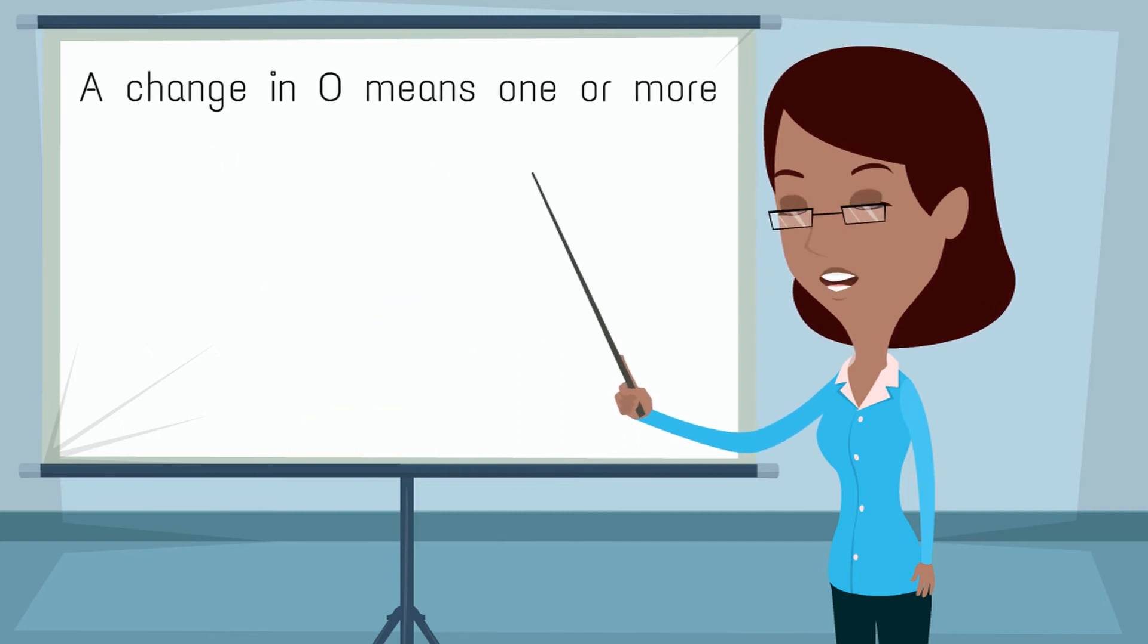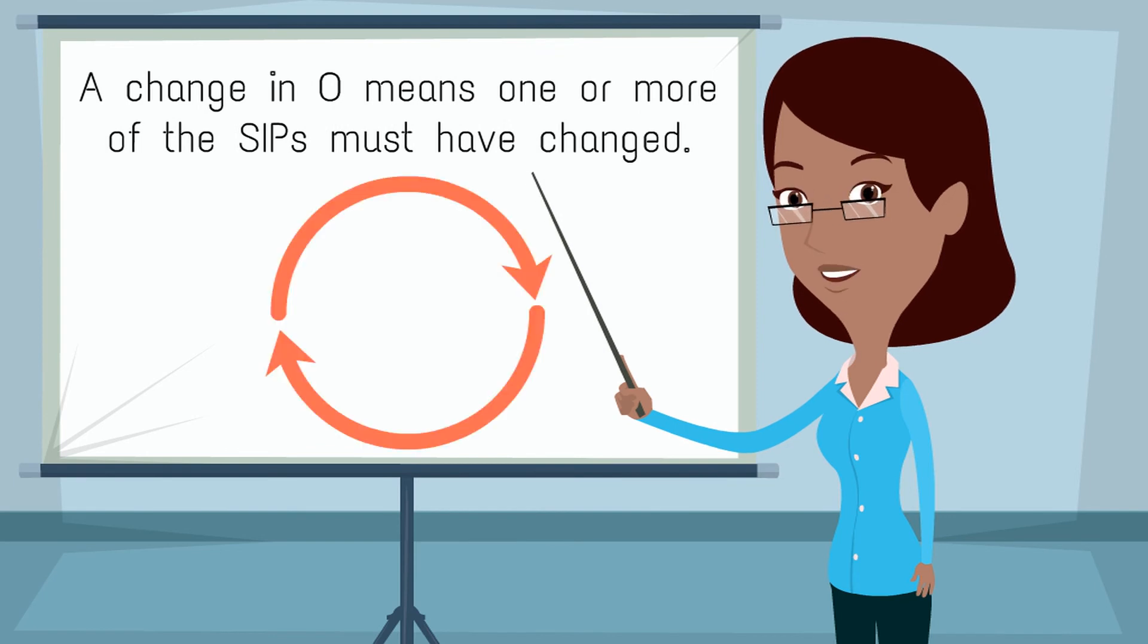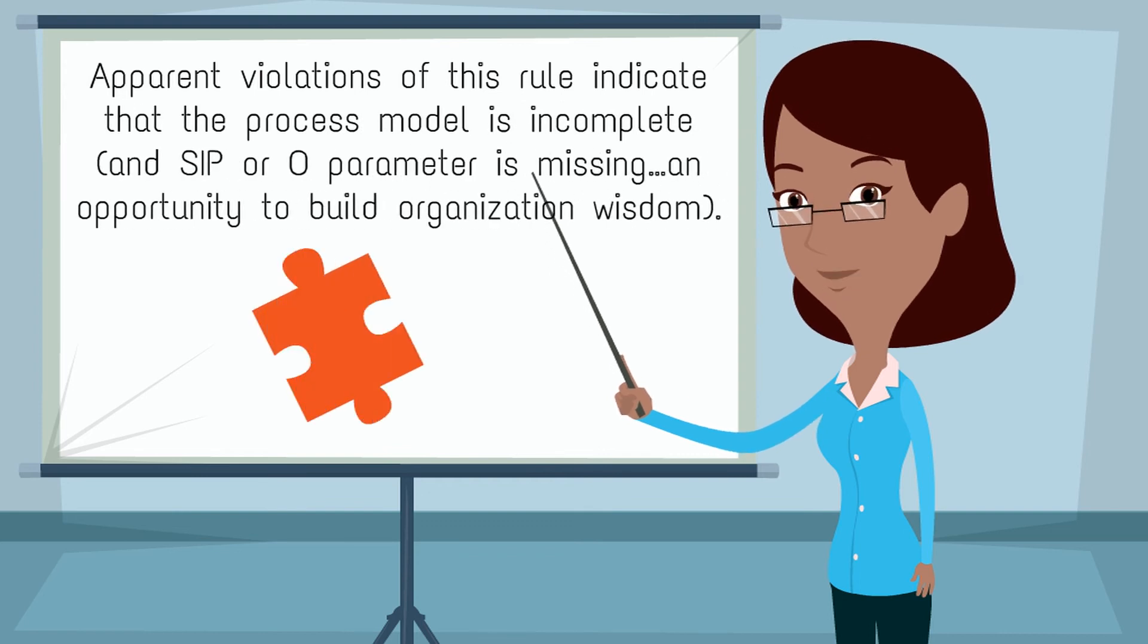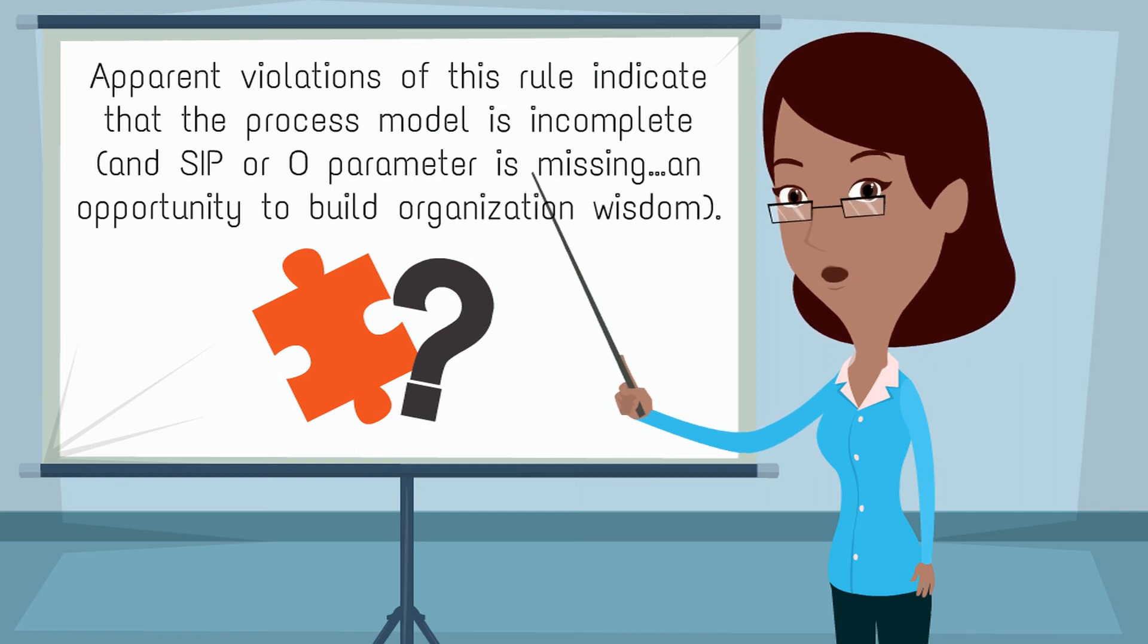A change in O means one or more of the SIPs must have changed. Apparent violations of this rule indicate that the process model is incomplete, and SIP or O parameter is missing, an opportunity to build organization wisdom.